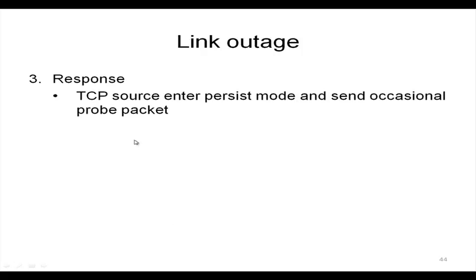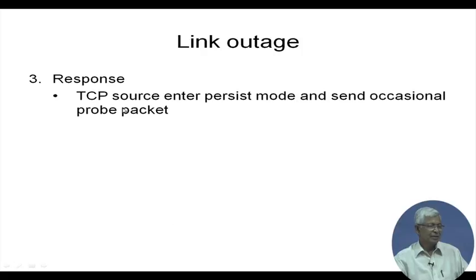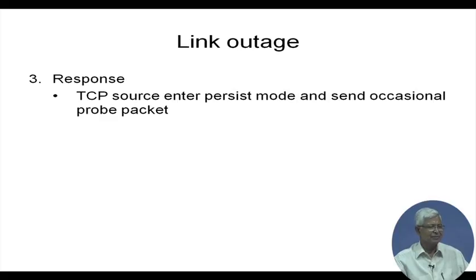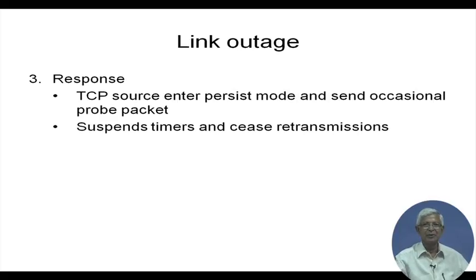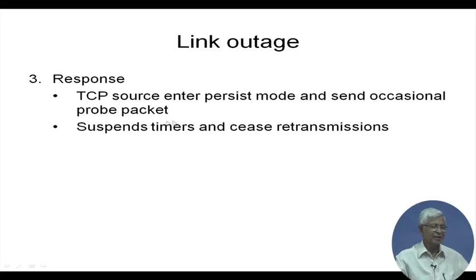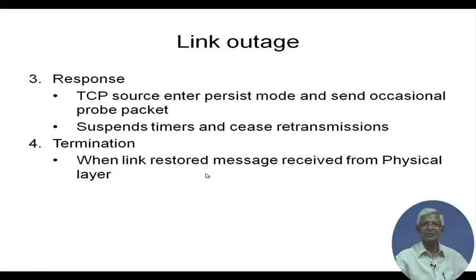In response to a link outage message, the TCP source enters persist mode and sends occasional probe packets to check if the link has been restored. It suspends all timers and does not perform normal retransmissions — it transmits only the occasional probe packet. This phase terminates when a link-restored message is received from the physical layer.